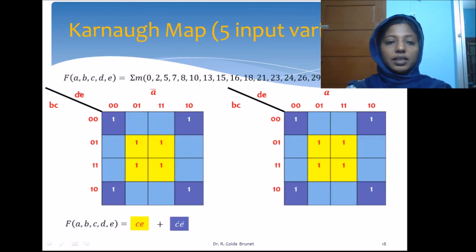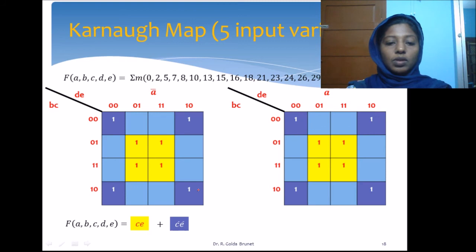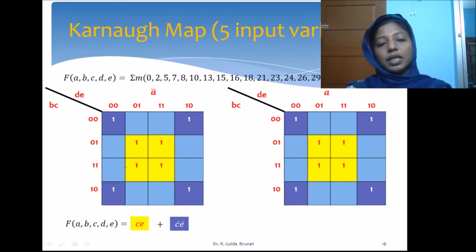Let us consider an example for a 5-variable Karnaugh map where we have to simplify a Boolean expression given as a sum of minterms. We mark the 1s: M0, M2, M5, M7, M8, M10, and so on. The pattern of 1s is identified, and we see that these 4 cells are adjacent to each other in the A-bar map, and these 4 cells are adjacent to each other in the A map.